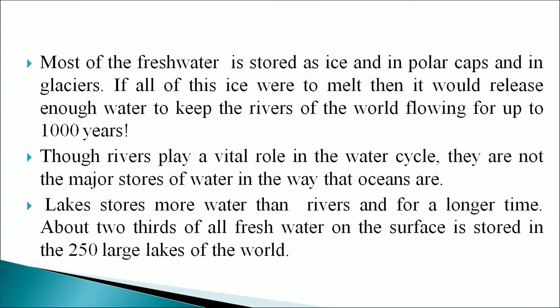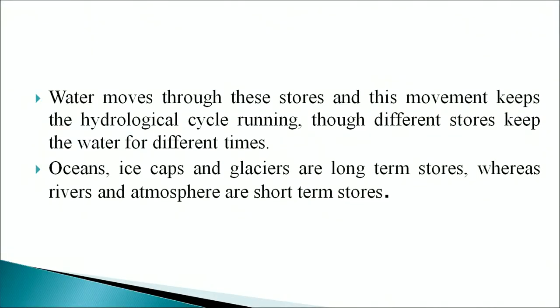Most of the fresh water is stored as ice in polar caps and glaciers. If all this ice were to melt, it would release enough water to keep the rivers of the world flowing for up to 1000 years. Though rivers play a vital role in the water cycle, they are not the major stores of water in the way that oceans are. Lakes store more water than rivers and for a longer time — about two-thirds of all fresh water on the surface is stored in the 250 large lakes of the world. Ocean ice caps and glaciers are long-term stores, whereas rivers and the atmosphere are short-term stores.